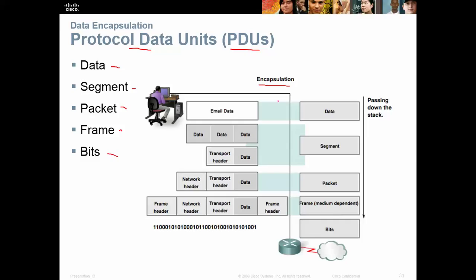This is the encapsulation process. Let's say we're going to email someone — we write our email, click send, and that data gets packaged up. It gets a transport header put on it as part of the encapsulation process. At the network layer, we put the network header on. Then at the very bottom layer, we put our frame on, and then it turns into ones and zeros — our binary — and gets sent through the wire. Data, segment, packet, frame, bits. It goes out to the router, out to the cloud, and hopefully gets delivered to the other end. That's the simple way of describing the encapsulation process.